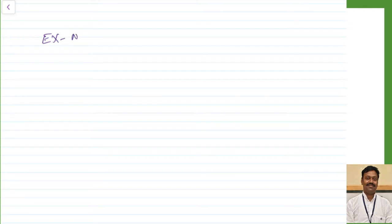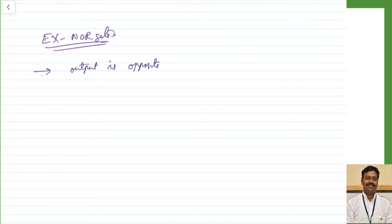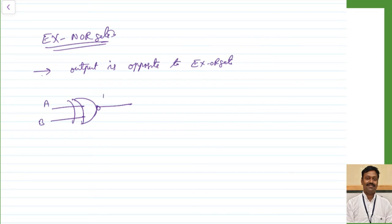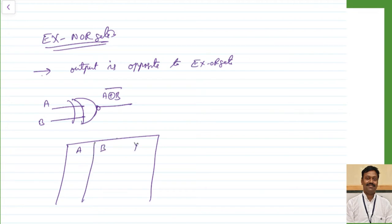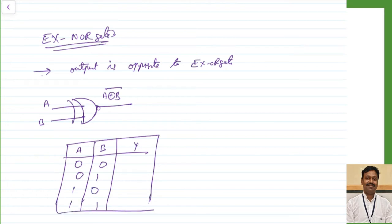Next, let us go to the exclusive NOR gate. The XNOR gate output is just opposite to the XOR gate. It is represented by an XOR gate symbol with a bubble at its output. With inputs A and B, the output is (A XOR B)̄. The truth table is exactly opposite to XOR: when both inputs are 0, output is 1; when inputs are dissimilar, output is 0; when both inputs are 1, output is 1.